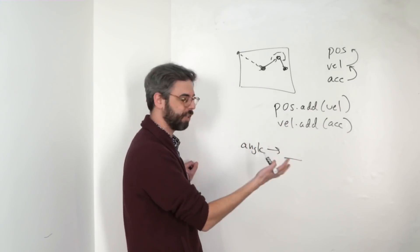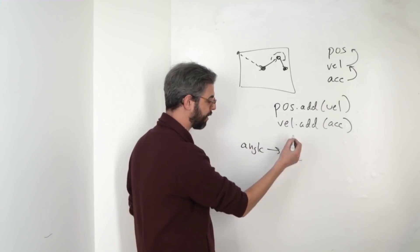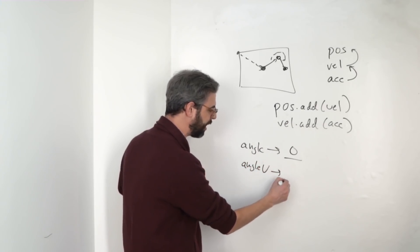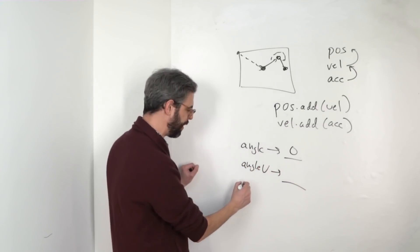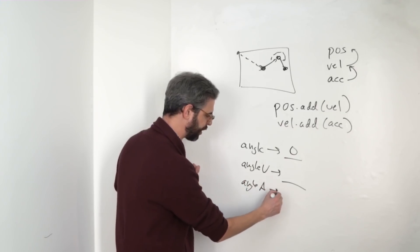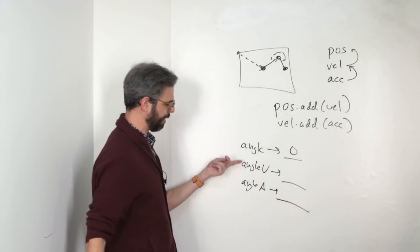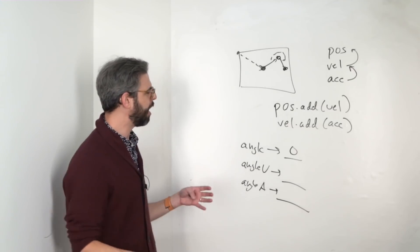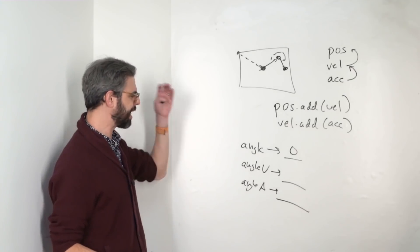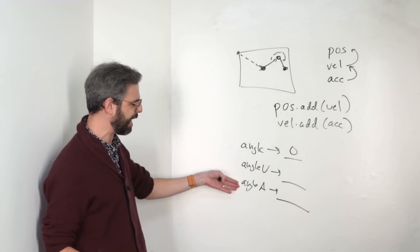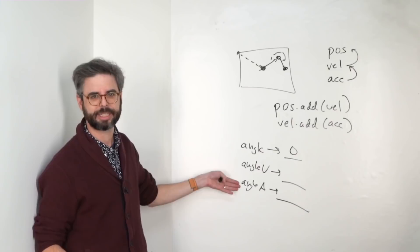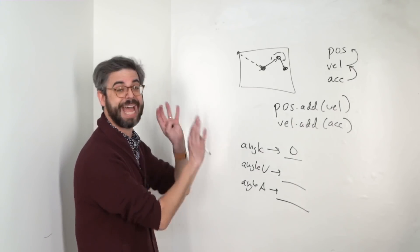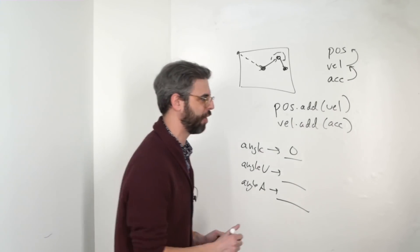Angle is one number, a single value. Maybe it starts at zero. Then I might have an angular velocity and an angular acceleration. I think naming them angle velocity and angle A for angular acceleration is going to work. So this is what I want to first start with and add to this sketch over here.